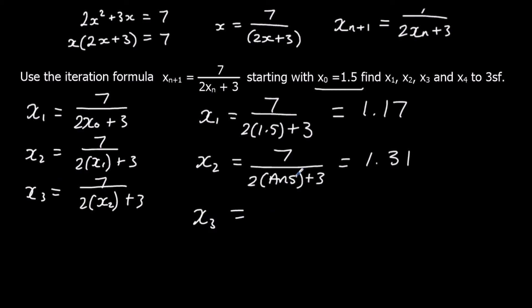And then, because we've already got answer written in the calculator, we can just click equals again. And that gives us 1.24 to 3 significant figures. And we could just click equals again, and that will give us x4, which is 1.28 to 3 significant figures.